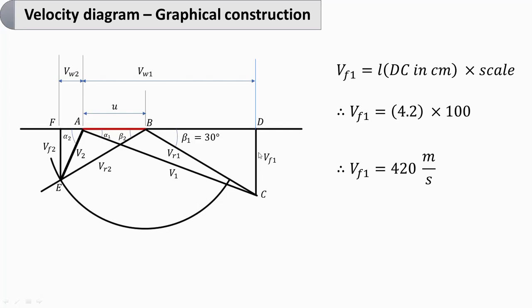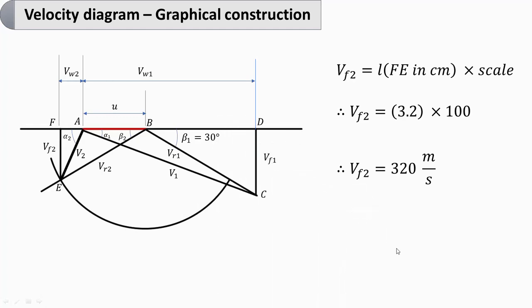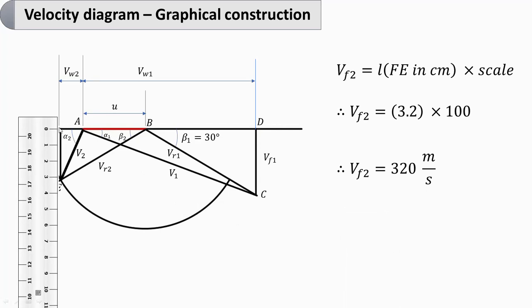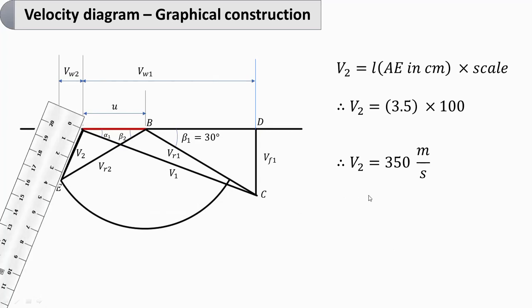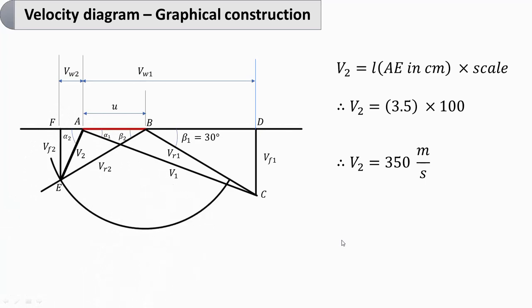The flow velocity at inlet VF1 is length DC: 4.2 centimeter multiplied by 100 gives 420 meter per second. VF2, which is length FE, is 3.2 centimeter multiplied by 100 giving 320 meter per second. The absolute velocity at outlet V2 is length AE: 3.5 centimeter into 100 gives 350 meter per second.